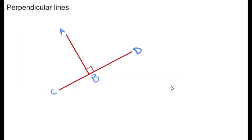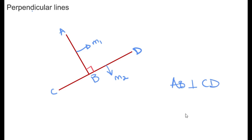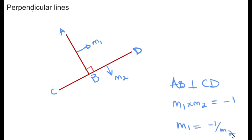Perpendicular lines: when working with perpendicular lines in analytical geometry, the gradients are not equal but they multiply to give negative 1. So if AB is perpendicular to CD, then M1 × M2 = −1, which can also be written as M1 = −1/M2 (the negative inverse of M2).